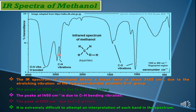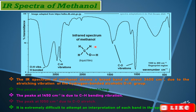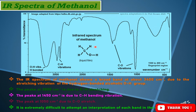Moving to lower frequencies, there are two vibrations due to stretching vibrations of carbon-hydrogen. These are below 3000 cm⁻¹ in the case of methanol, which are the C-H stretching vibrations. We have also established that C-H stretching vibrations are below 3000 cm⁻¹.